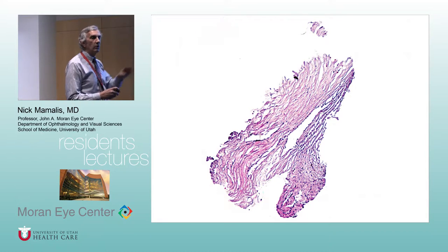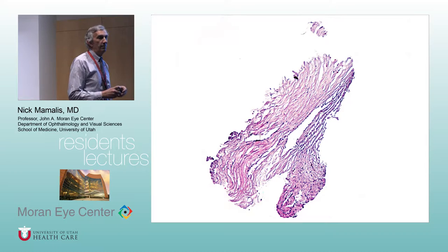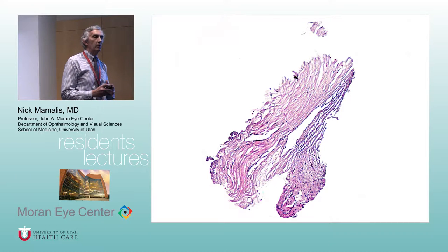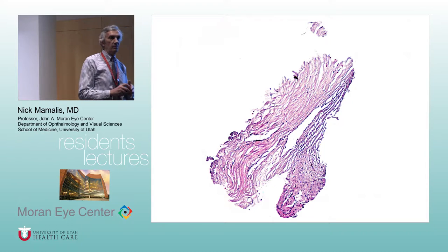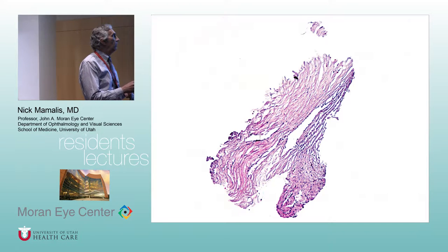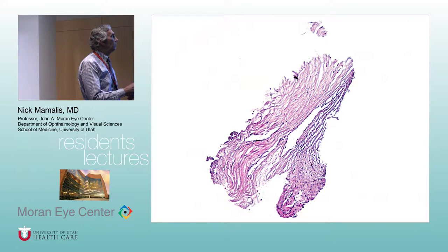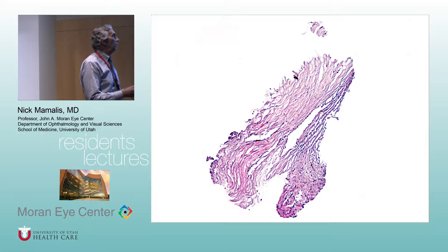Looking further in, how do we subdivide the trabecular meshwork? There's a pigmented portion and a non-pigmented portion. The non-pigmented portion is more anterior, and then you see a darker line — that's the pigmented trabecular meshwork. Underneath the pigmented trabecular meshwork you see the scleral spur, which is a piece of sclera sticking out, and then finally the ciliary body or iris root.